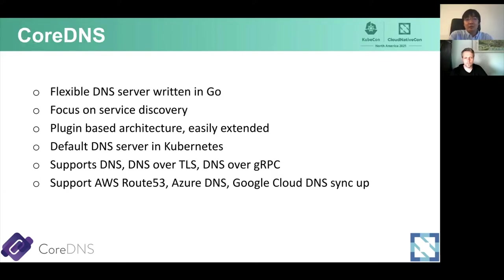As many of you know, CoreDNS is a flexible DNS server written in Go. It has a focus on service discovery. One interesting thing about CoreDNS is that it is plugin-based, which means it can be easily extended. If there's any new feature you're interested in, you can always add it yourself and learn how to write in Go. Since Kubernetes 1.13, CoreDNS is the default DNS server, which means nowadays CoreDNS is used by many people and institutions around the world in production systems.